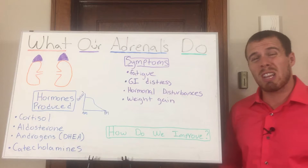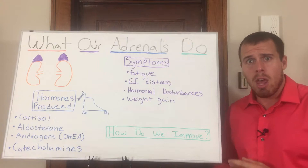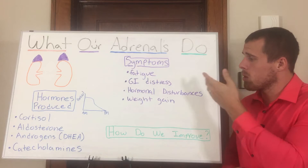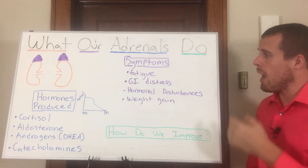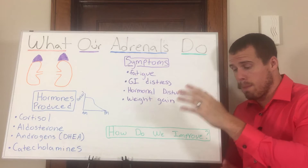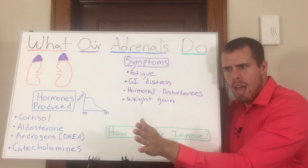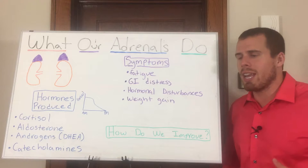Then we'll talk about hormonal disturbances. The body is always going to shift its energy to surviving and taking care of the moment at hand, and it will cause issues when it comes to hormonal regulation because it's not really concerned about recovering and reproduction — it just wants to survive. What happens is what is known as pregnenolone steal. We have our pregnenolone, which can be converted to either progesterone or cortisol. If we don't have adequate cortisol, we're going to shift to trying to make more cortisol so we can deal with the stress at hand.